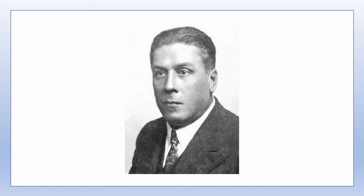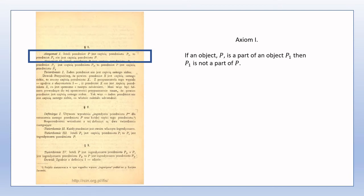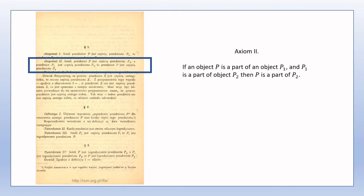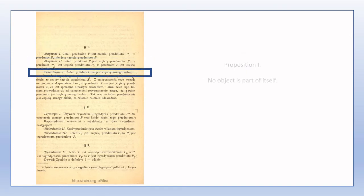I'll also include a link in the description to this video. Section 1 introduces the first two axioms which concern the undefined term 'part'. Recall that 'object', though seemingly undefined, is not a true term in the system. Thus, 'part' is the only true undefined term of the system. Part is shown to be a transitive relation.